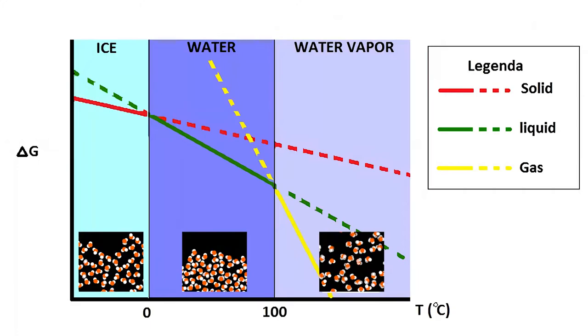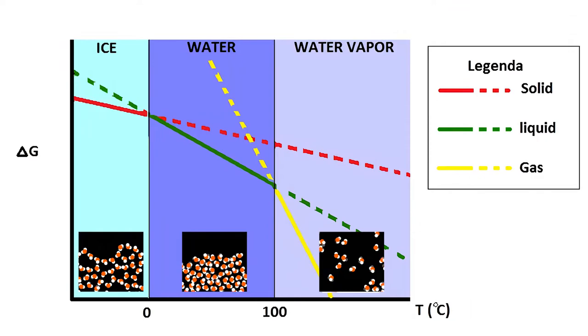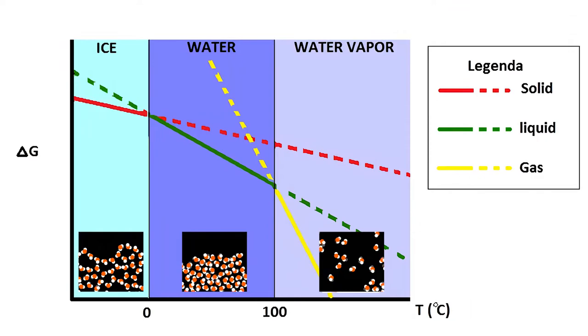the red line marking the Gibbs free energy of the solid state of water is below the Gibbs free energy of the liquid state of water. So to have the lowest Gibbs free energy the system wants to become a solid. This is kind of to be expected because normally we always see that water below zero degrees Celsius is a